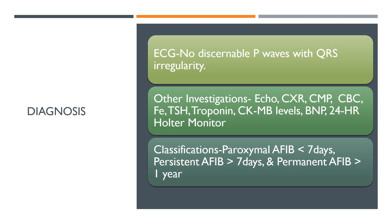Diagnosis. ECG will show an irregular rhythm without P waves and also an irregular QRS. Other investigations will help to evaluate for structural dysfunction, presence of thrombosis in the atrial compartments, and also help to exclude secondary causes or underlying disease processes.